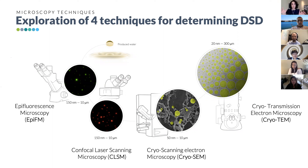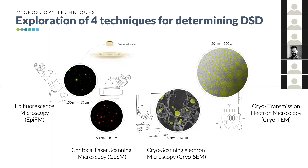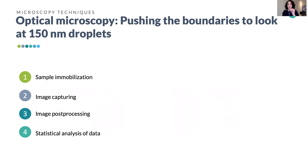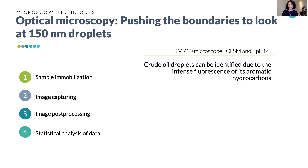Many commercially available microscopy-based methods can measure droplet size distribution, but the minimum size they can detect is around one to two micrometers in diameter. What we did was push the limit further to look at tiny droplets at 150 nanometer size. To do this we optimized each step involved: first, sampling immobilization; second, imaging capture; third, image post-processing; and fourth, statistical analysis of the data. The equipment we used was the LSM 710 Zeiss microscope — a confocal microscope that also takes epifluorescence images.